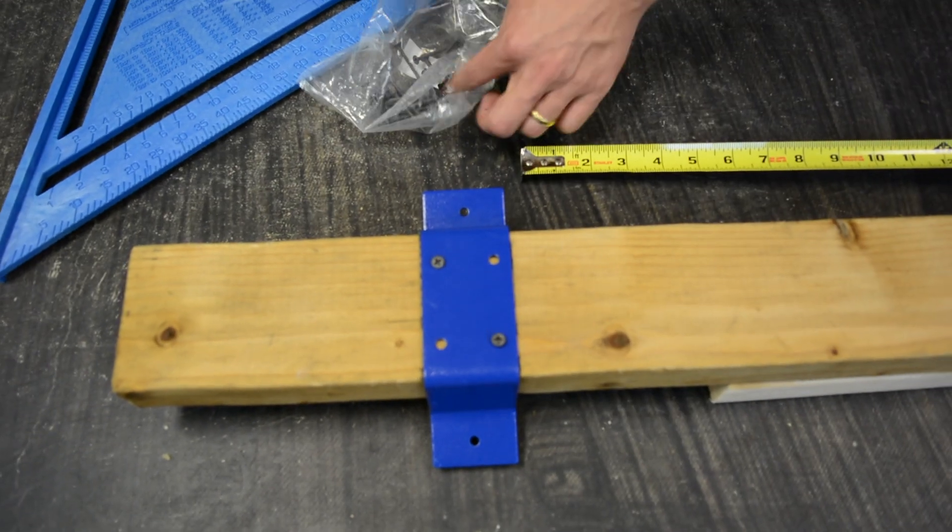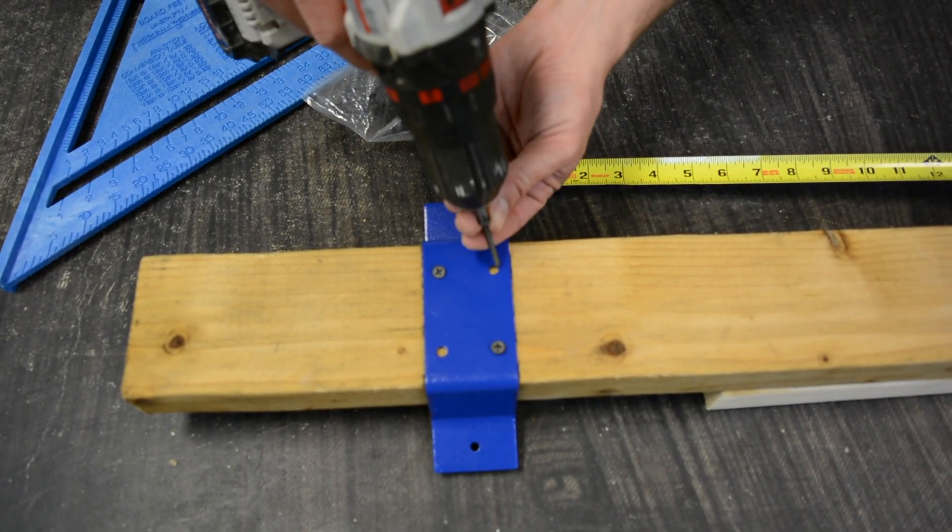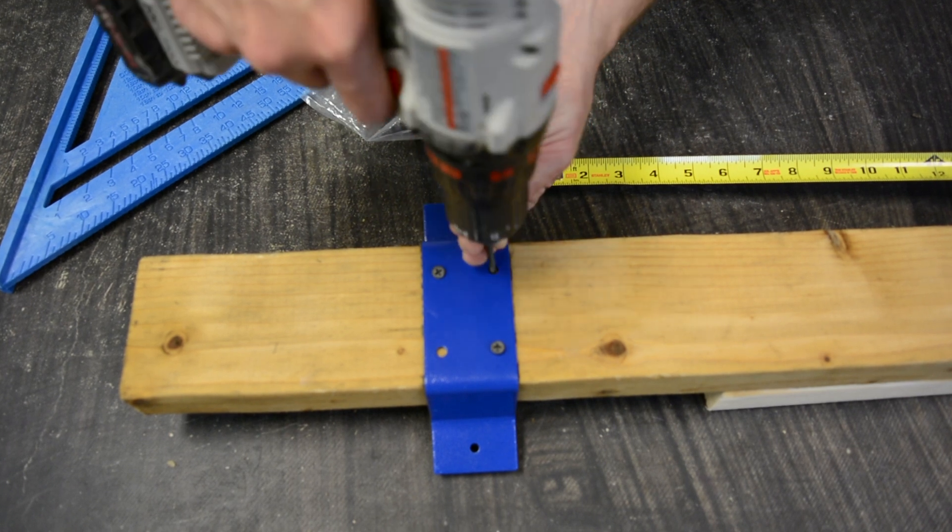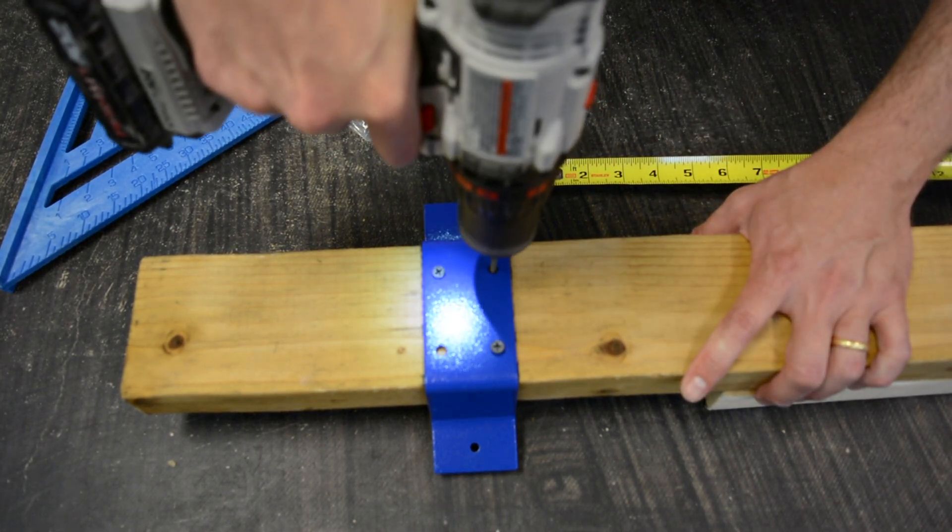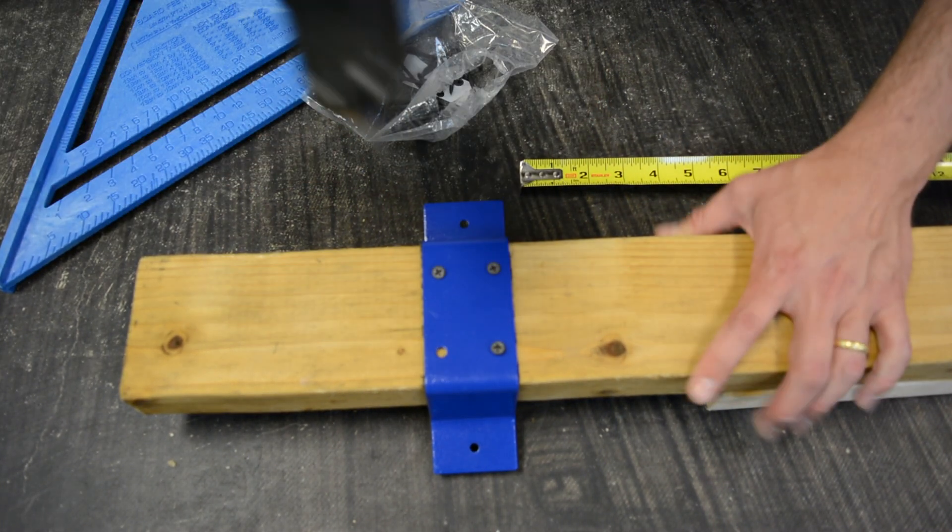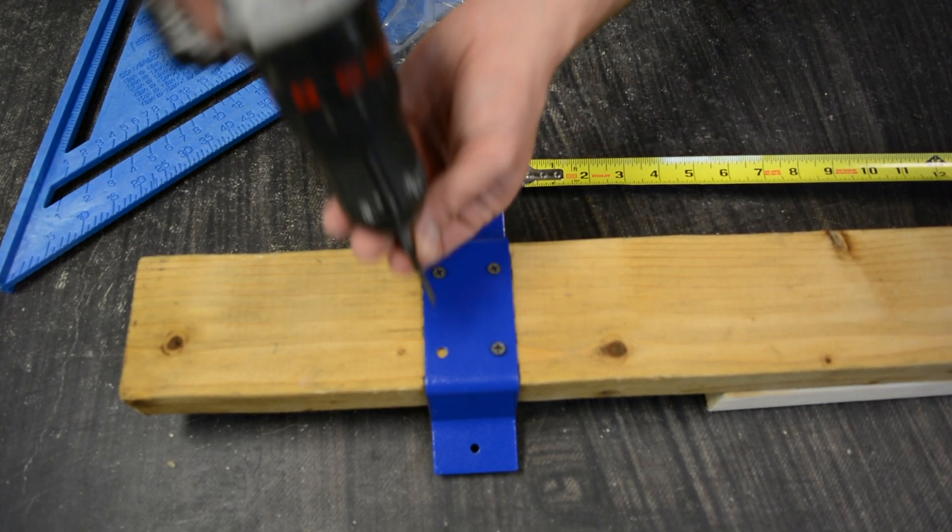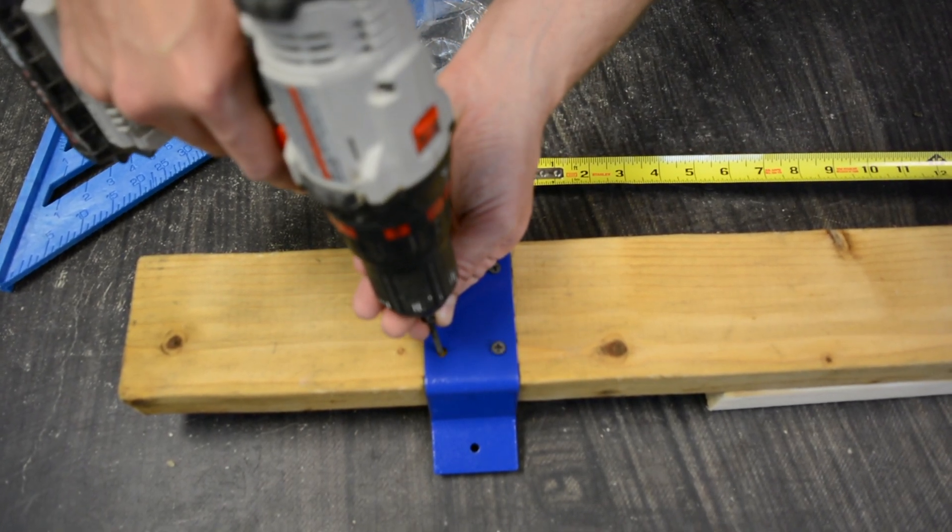Now, when you're attaching your stud mounts, you want to make sure that they stay exactly on that line, and also are perpendicular with the beam. It's very important that each one of the mounts is perpendicular with the beam, because if it's not, then your M2 will not cut properly.